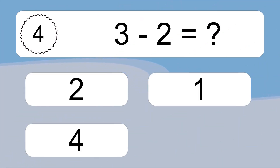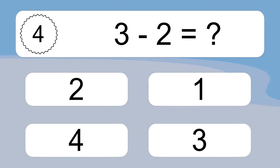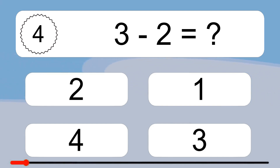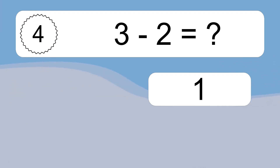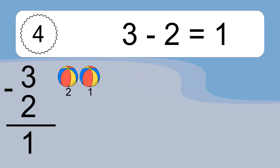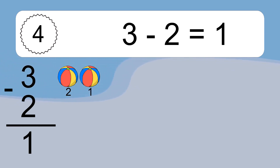3 minus 2 equals what? 3 minus 2 equals 1. Let's count it: 2, 1.